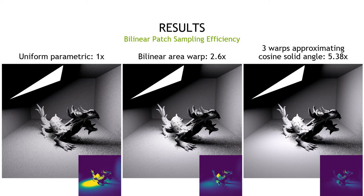The next result applies warp composition to the problem of sampling bilinear patches. Since there is no known solid angle sampling method for bilinear patches, the baseline of comparison is uniform parametric sampling. Composing one bilinear warp with the parametric warp — where the bilinear warp tries to compensate for the parametric stretch and approximate uniform area sampling — yields a speedup of more than two and a half times. Further extending the warp chain to approximate a solid angle term and a cosine term results in more than five times efficiency improvement. This demonstrates two important ideas: that composing three or four or more warps can be effective, and that we now have a general recipe for approximating cosine weighted solid angle sampling for arbitrary or unusual geometries.